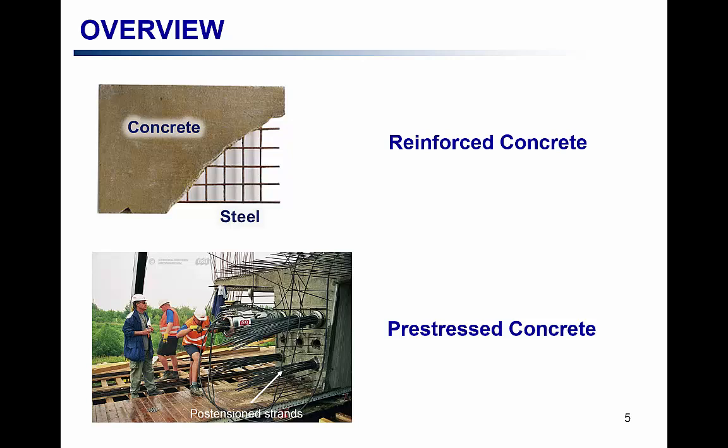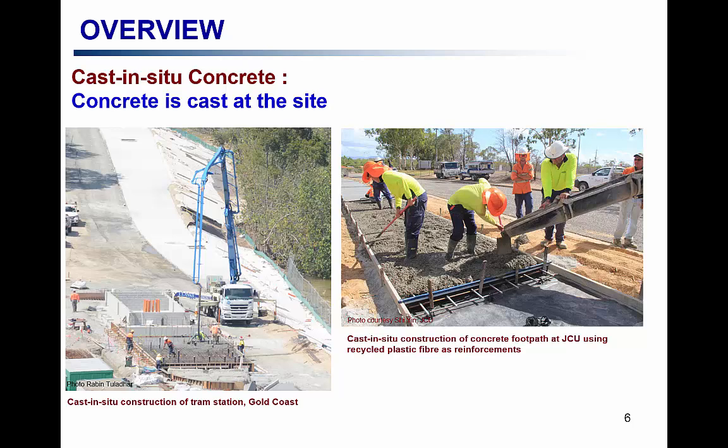Looking at the ways concrete can be used, it can be divided into two types. The first is reinforced concrete — the combination of concrete and steel, as discussed earlier. The second is prestressed concrete, where the steel is stressed. There are specific advantages of stressing the steel in concrete structures, which we will discuss when we cover prestressed concrete.